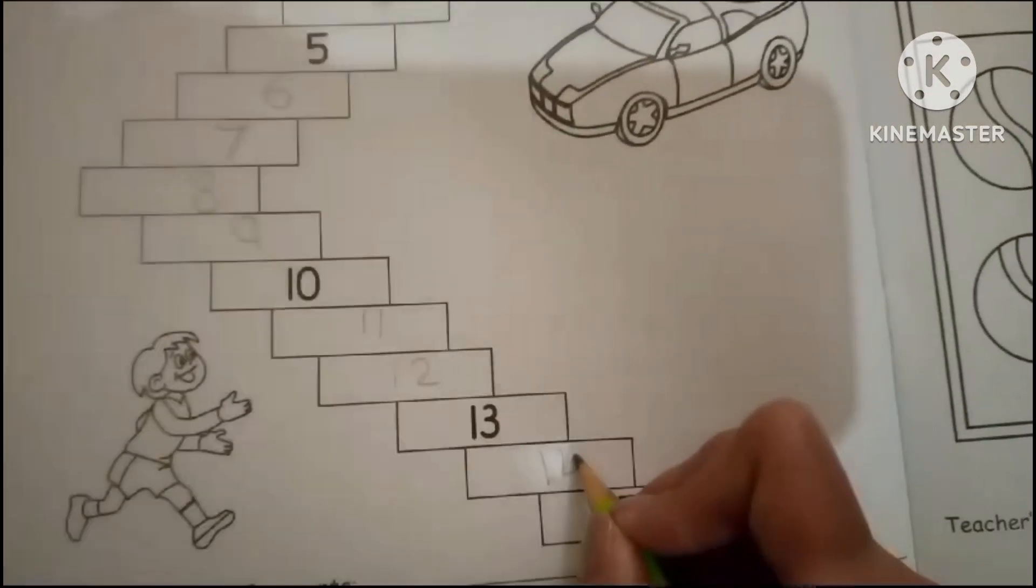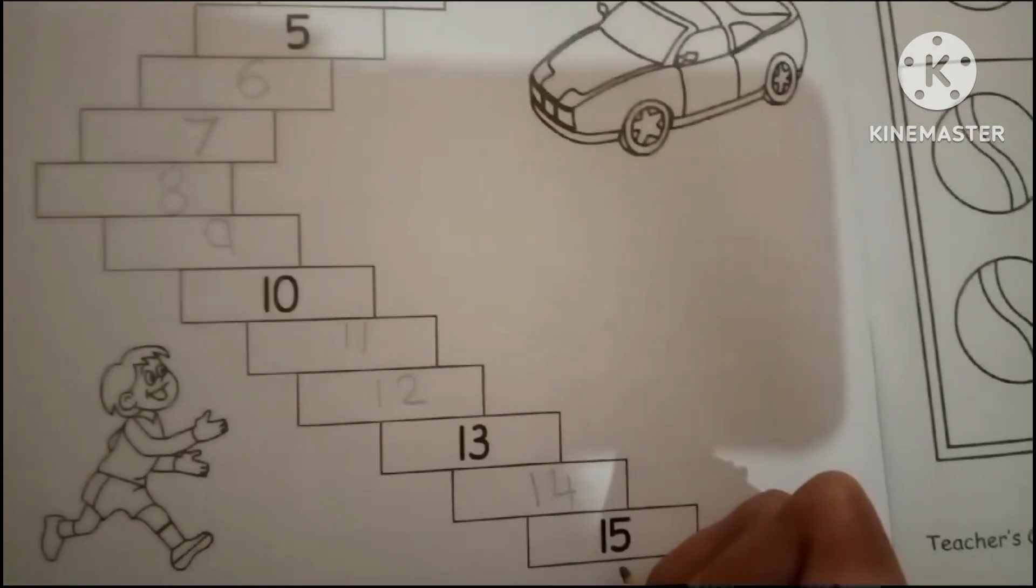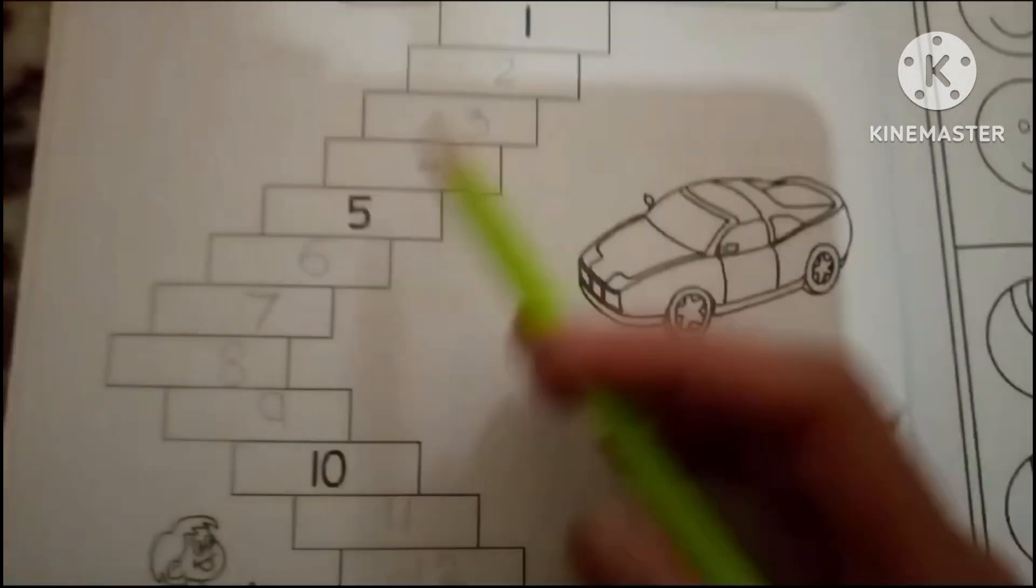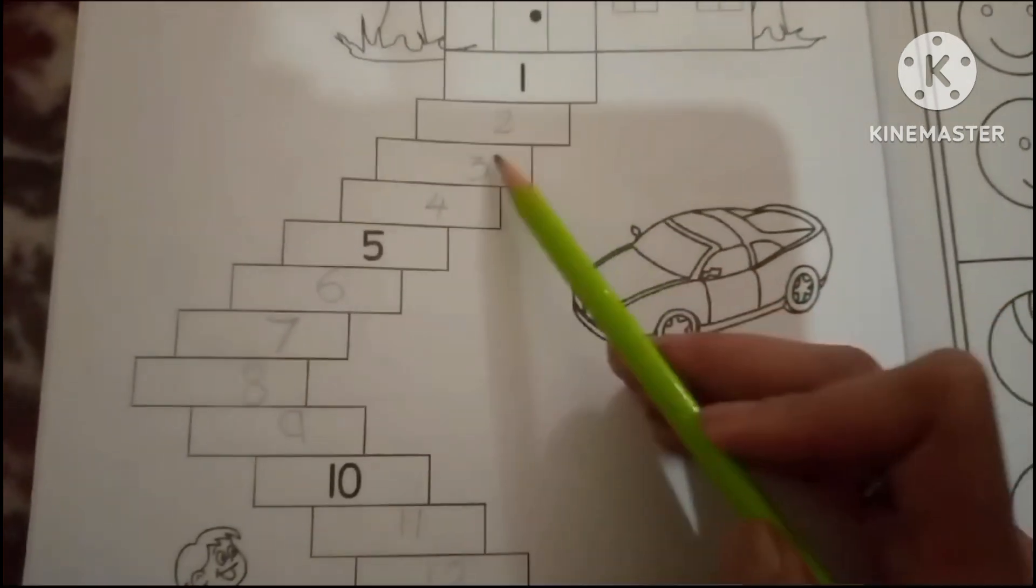Fourteen, and the last one is fifteen. So there are fifteen stairs. One, two, three, four, five, six, seven, eight, nine, ten, eleven, twelve, thirteen, fourteen, fifteen.